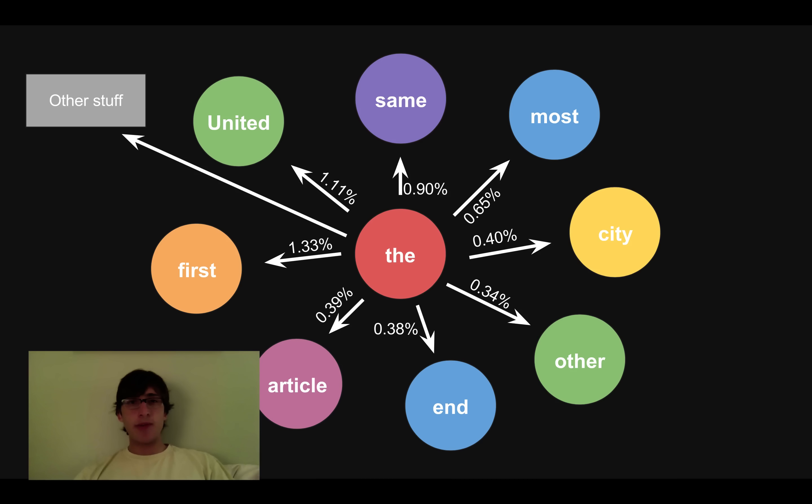So now I still have to explain how we can use this to actually generate a random block of text. And basically, I'm just going to explain how we generate the next word in a block of text, because if you can generate the next word, then you can keep generating words, and you get a large string of text in the end. So let's say we've just generated the word the in our random block of text. Well, we're going to pick the next word we generate randomly because it's random, but we're going to do it in a biased way. And we're going to bias the next word in a way where first is more likely than end, and united is more likely than other, and actually we're going to bias it exactly so.